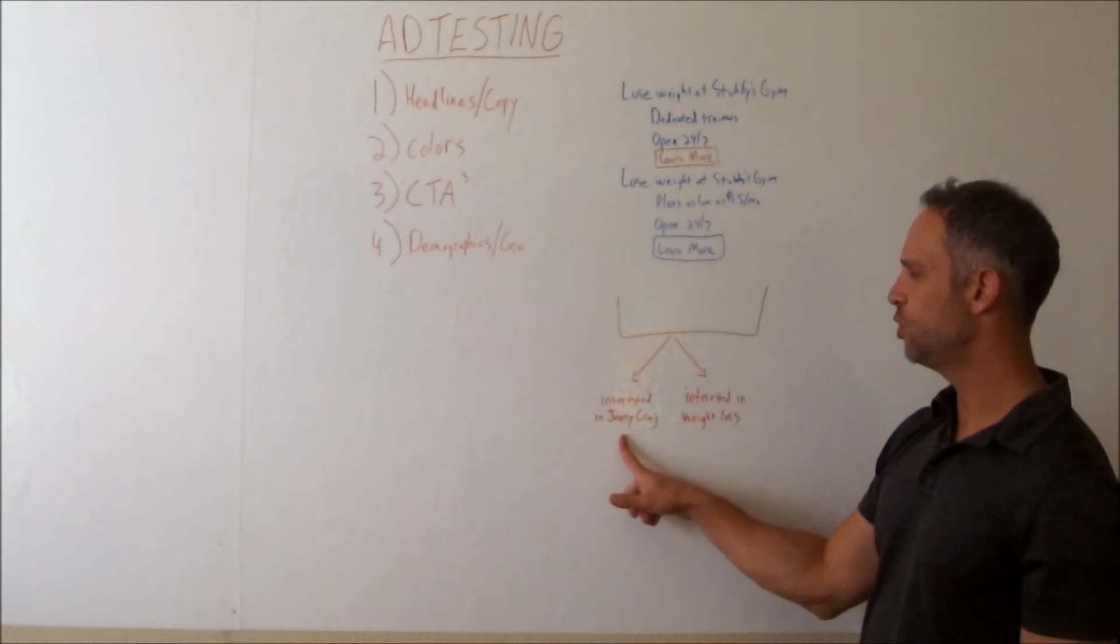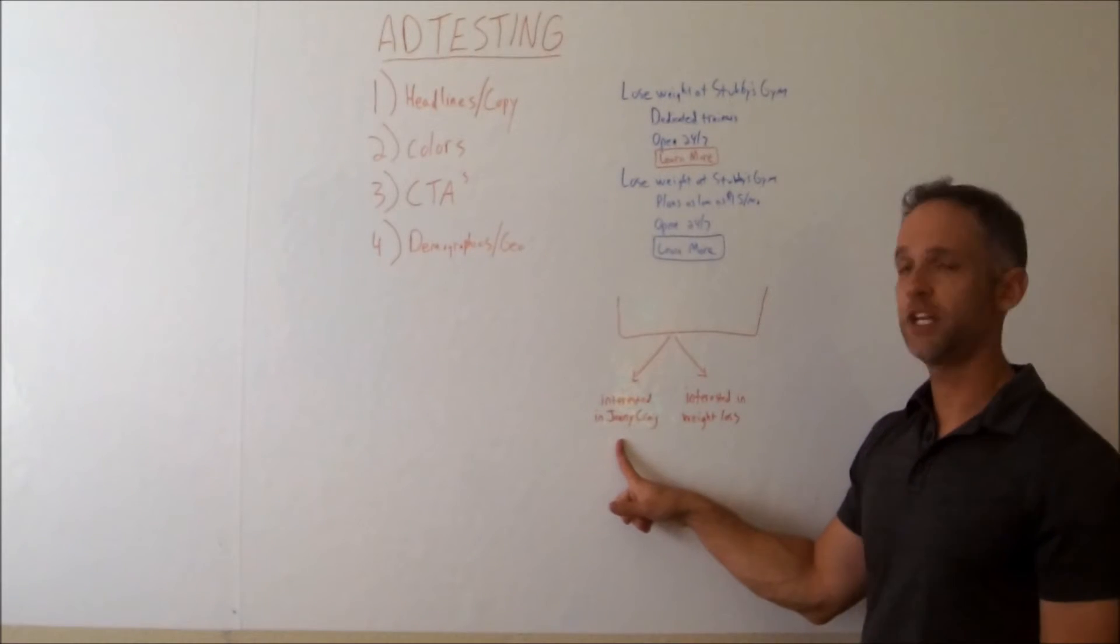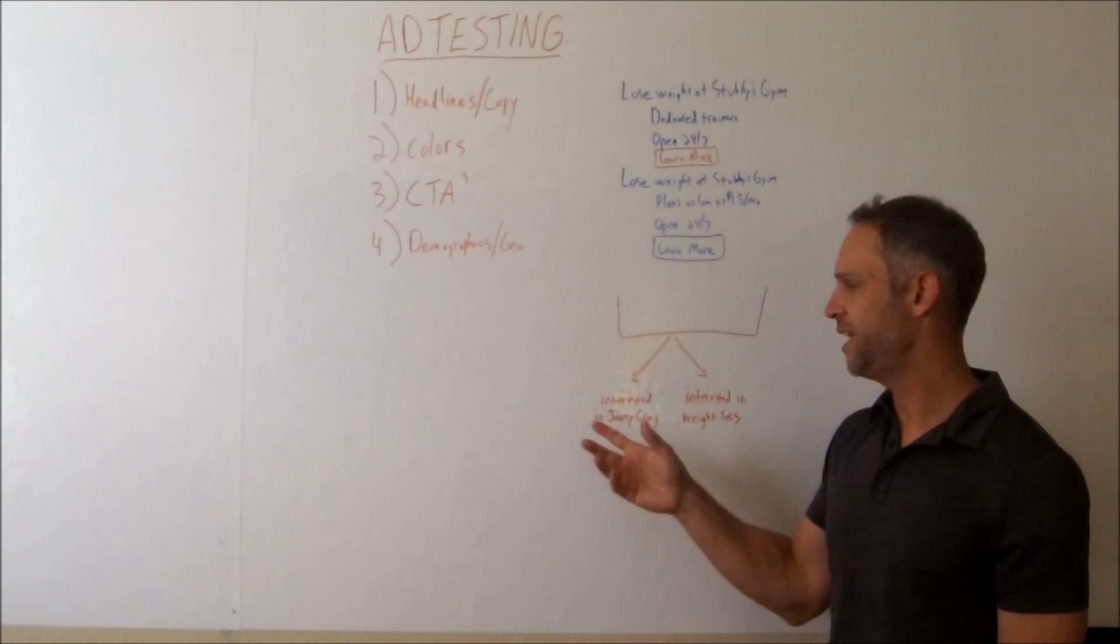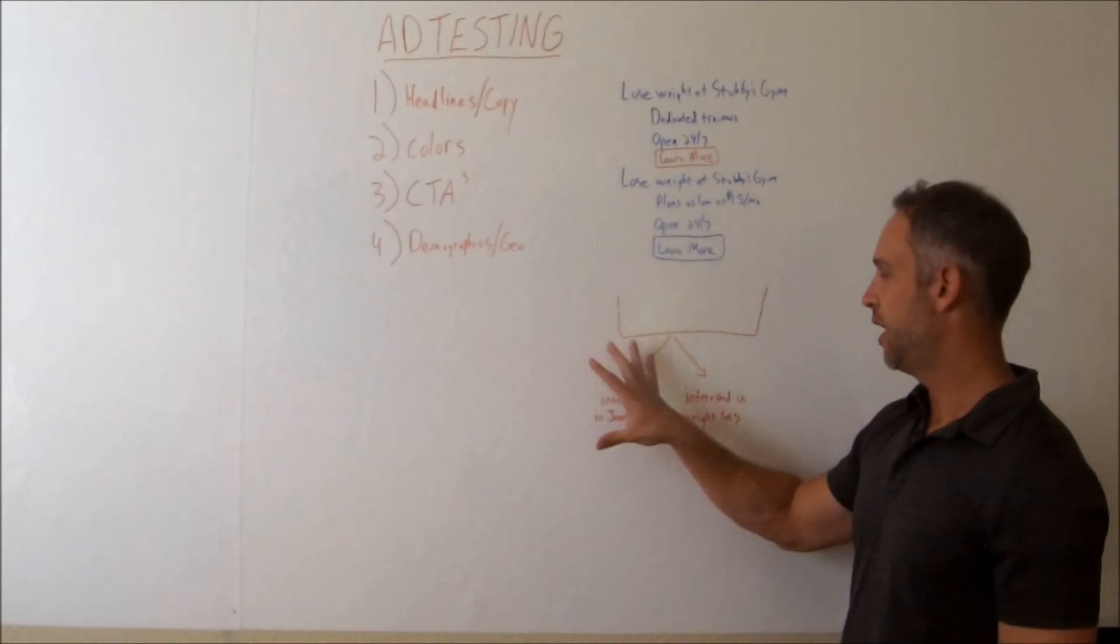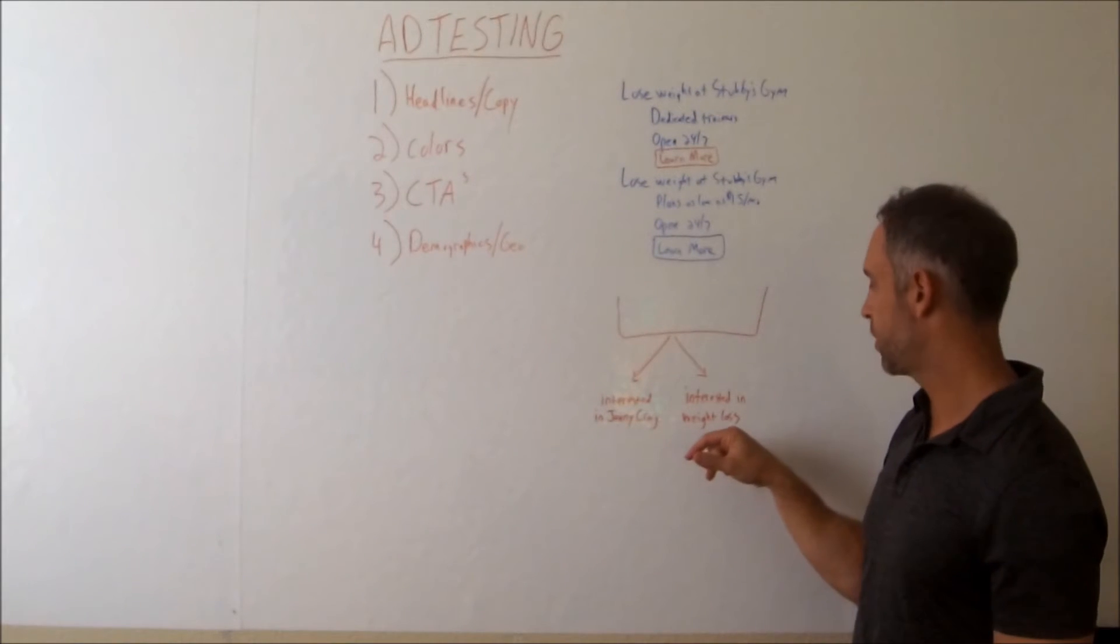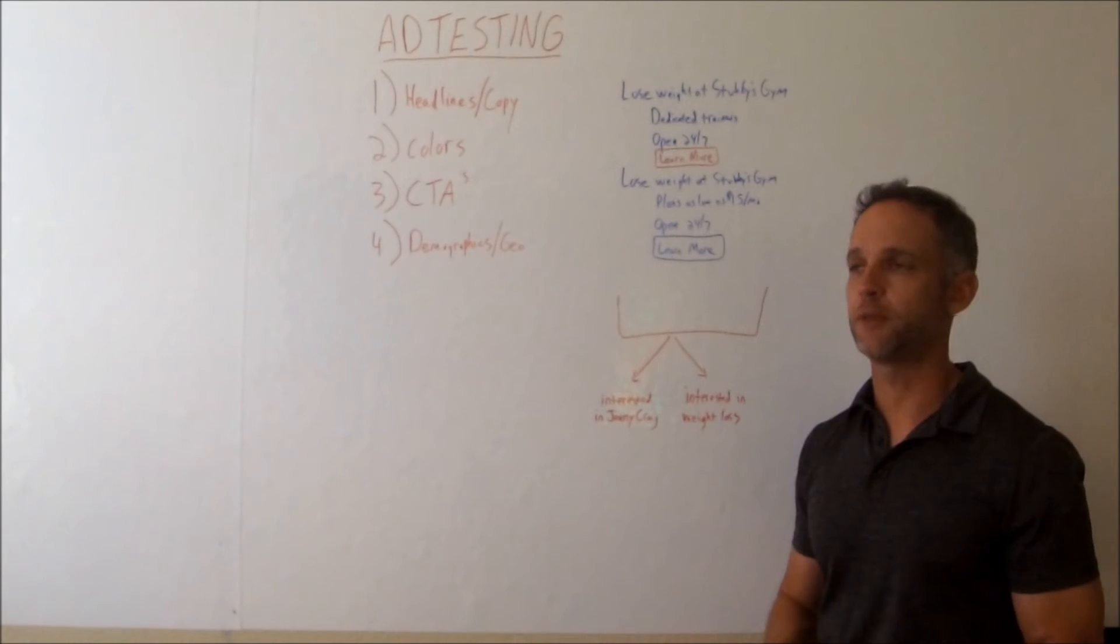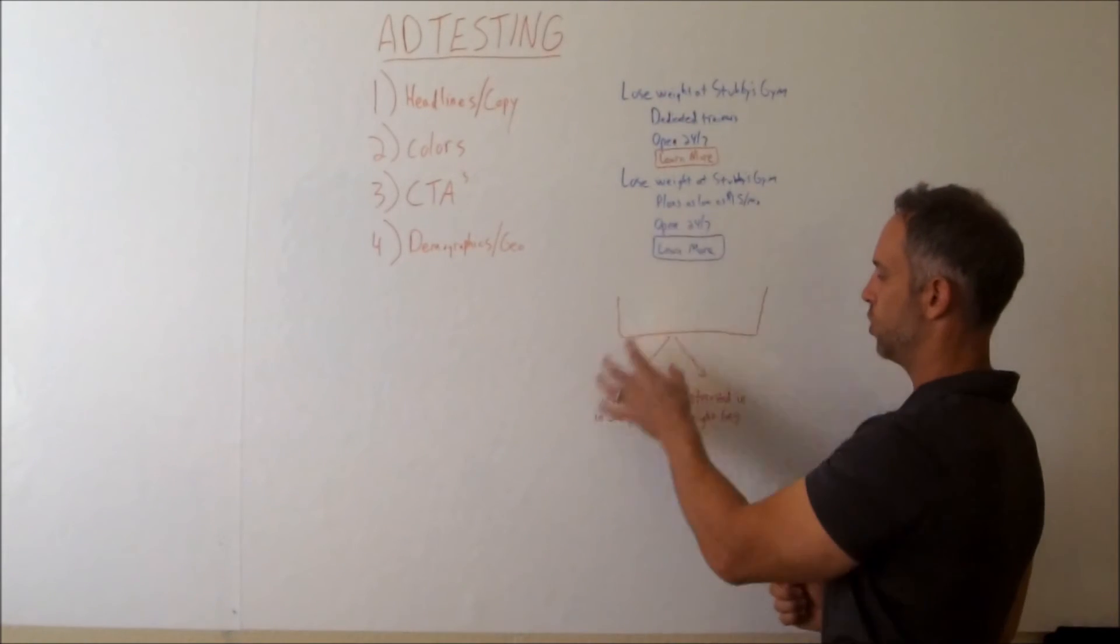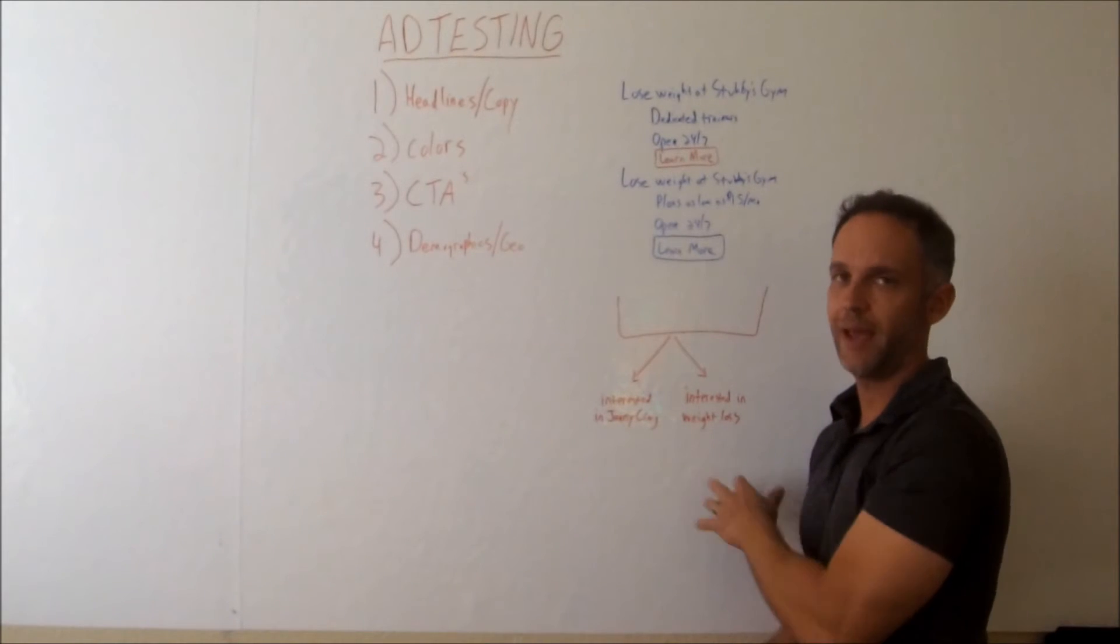So for this particular ad, you can run someone that's interested, that shows interest in Jenny Craig, a popular weight loss company or any other competitor that has to do with weight loss, Weight Watchers, whatever. So you can test that ad, that ad set one and two against a different demographic of interested in weight loss. People who are specifically interested in weight loss. Maybe they bought weight loss products. Maybe they're talking about weight loss. Whatever the case, you can compare the same ad groups across different demographics and get different results. Definitely happens all the time.